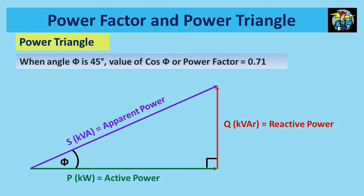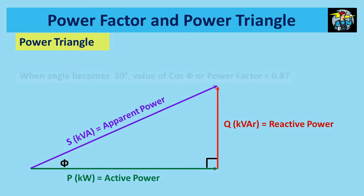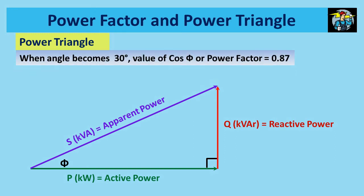When angle phi is at 45 degrees, value of cos phi or power factor is 0.71. You can get the value of cos 45 by using calculator or any other mean. When angle phi is at 30 degrees, value of cos 30 or power factor is 0.87. You will see that an angle of 30 degrees for cos phi is acceptable for electrical equipment since it has the power factor value of 0.87 now and has passed the general acceptance level of 0.8 power factor.